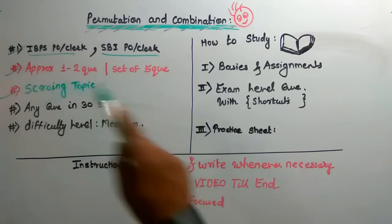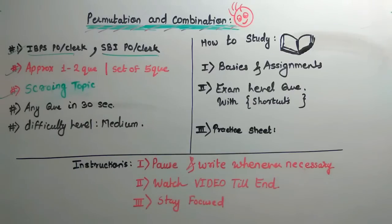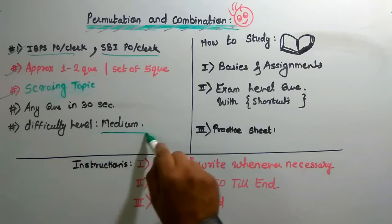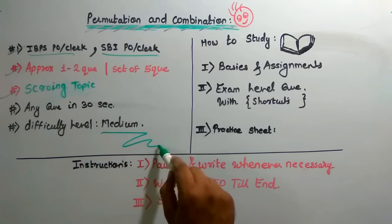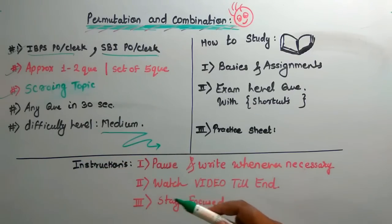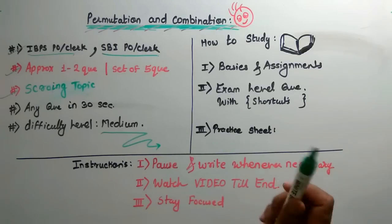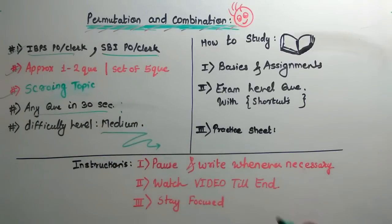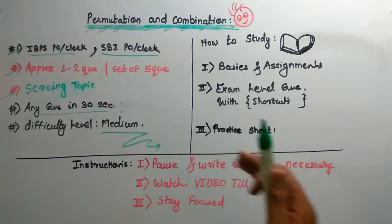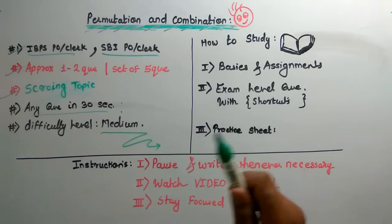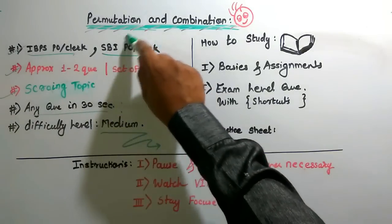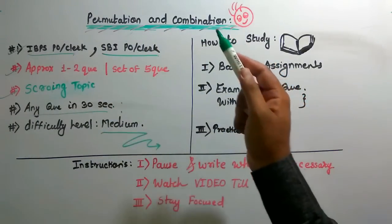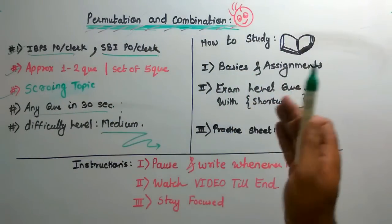This is one of the most scoring topics because the difficulty level is medium. So if it is a medium difficulty level, that's why there are less chances of error. Any question in 30 seconds — that is what I am going to do. I am going to provide techniques to solve any question, whether it is permutation or combination, within 30 seconds. This is my guarantee.